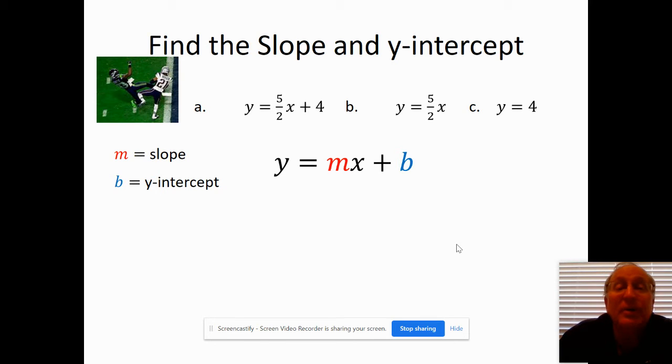What's nice is these are all written in slope-intercept form. The slope in the first equation is just the coefficient in front of x. It happens to be a fraction, which is often the case with slope because it's rise over run, which is 5 over 2. And the b would be the plus 4, or just 4. B is equal to 4.